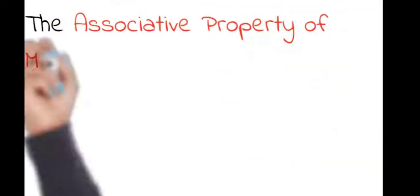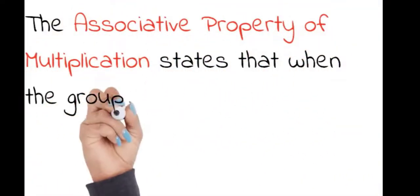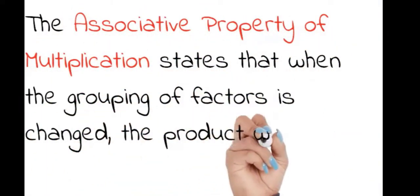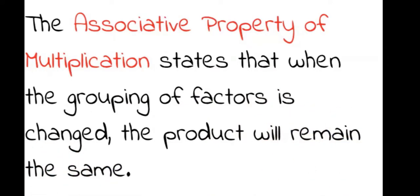The associative property of multiplication states that when grouping, when the grouping of factors is changed, the product will remain the same.